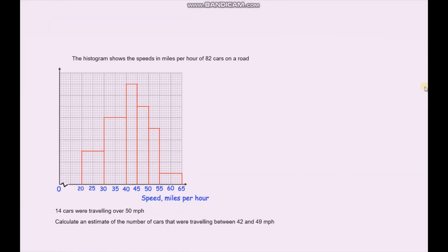Let's do another question. This one's slightly more complicated. The histogram shows the speeds in miles per hour of 82 cars on a road. 14 of the cars were traveling over 50 miles per hour. Calculate an estimate for the number of cars that were traveling between 42 and 49 miles per hour. Well first of all we're told that 14 cars were traveling over 50 miles per hour. So this area, this area here, must equal 14, because we know that the area is just the frequency. So that area equals 14.